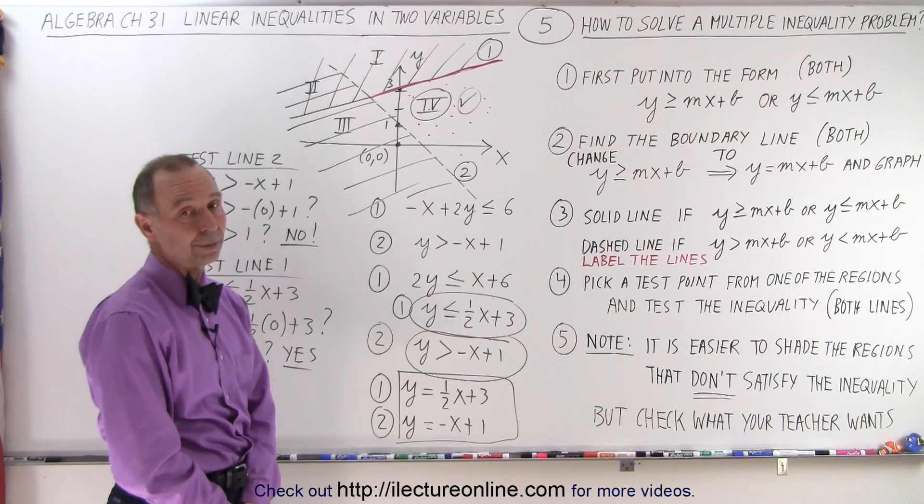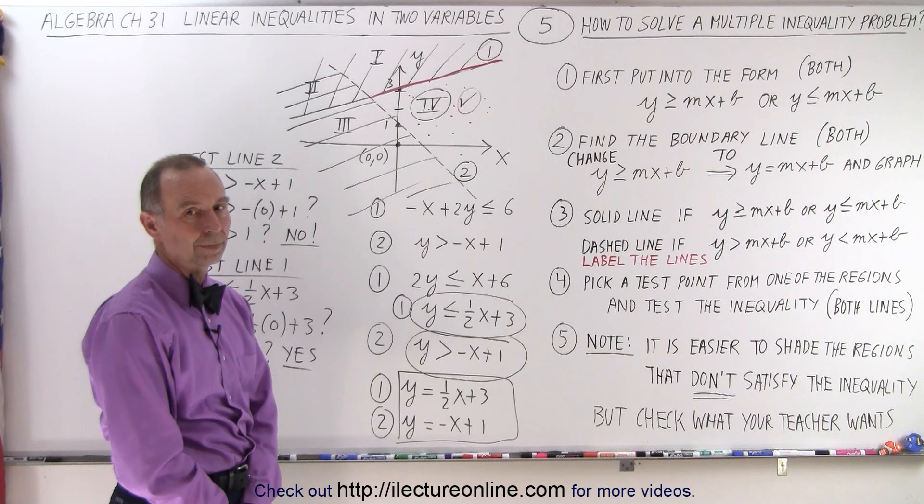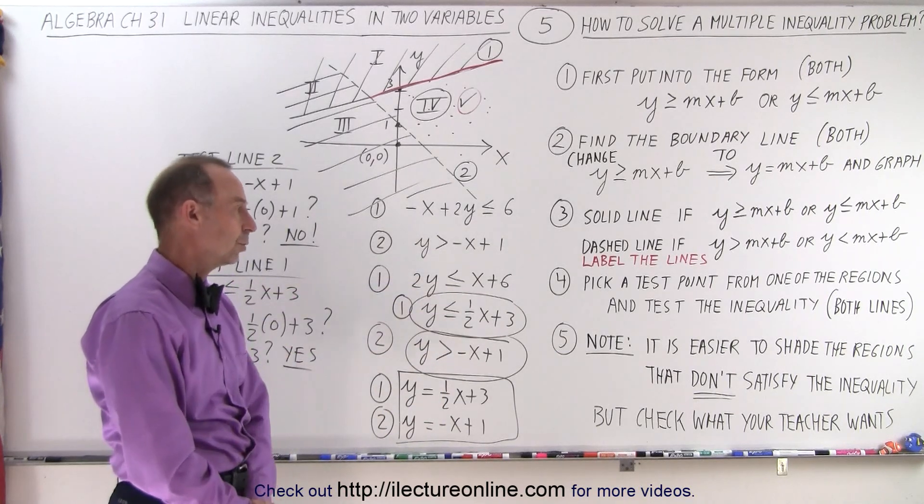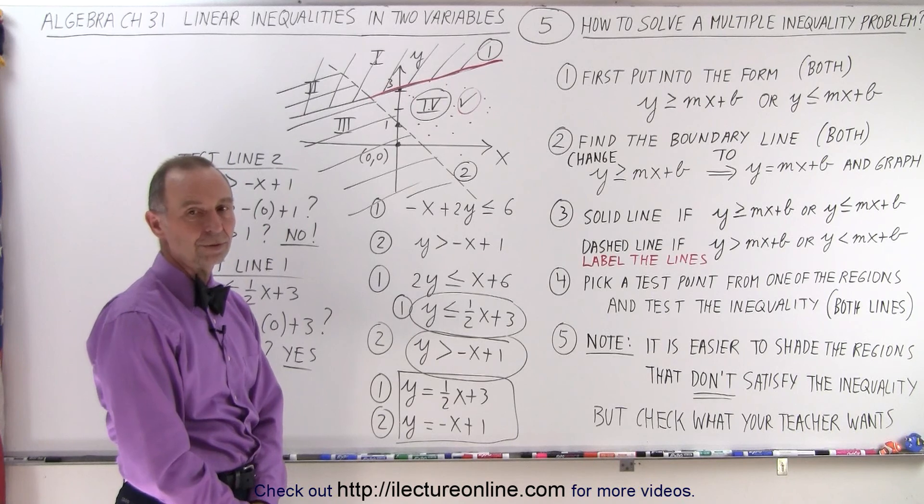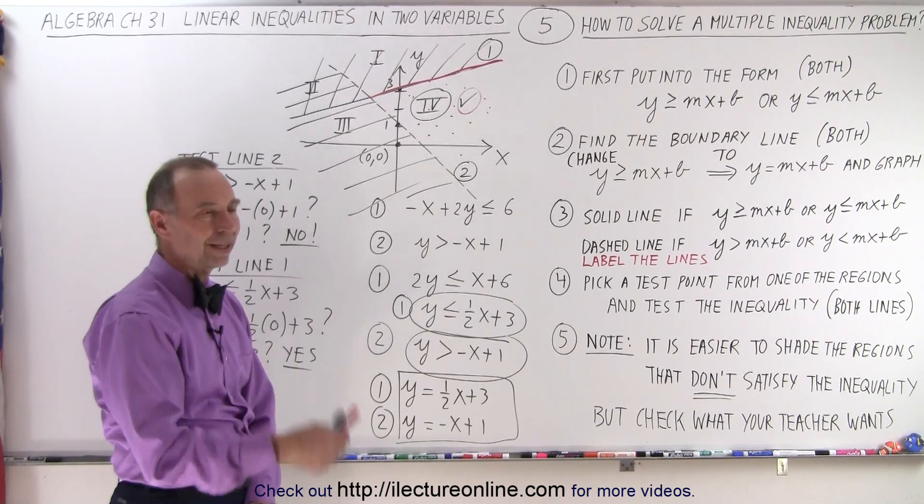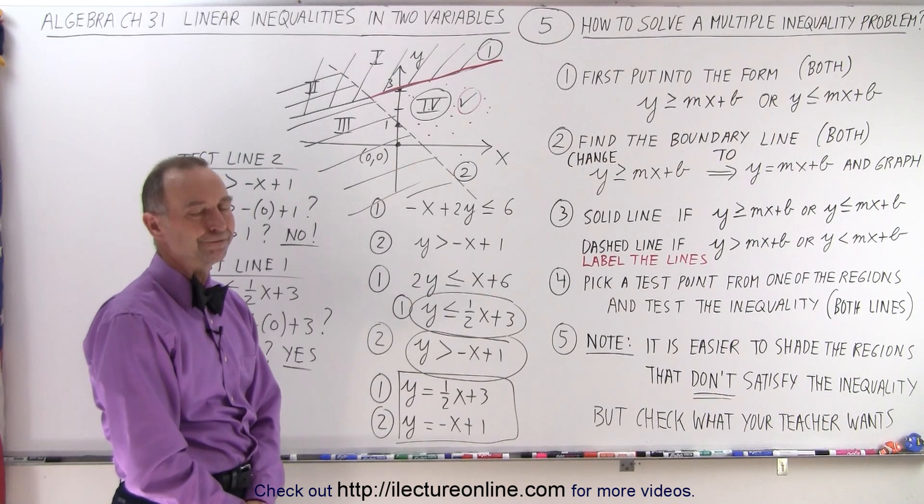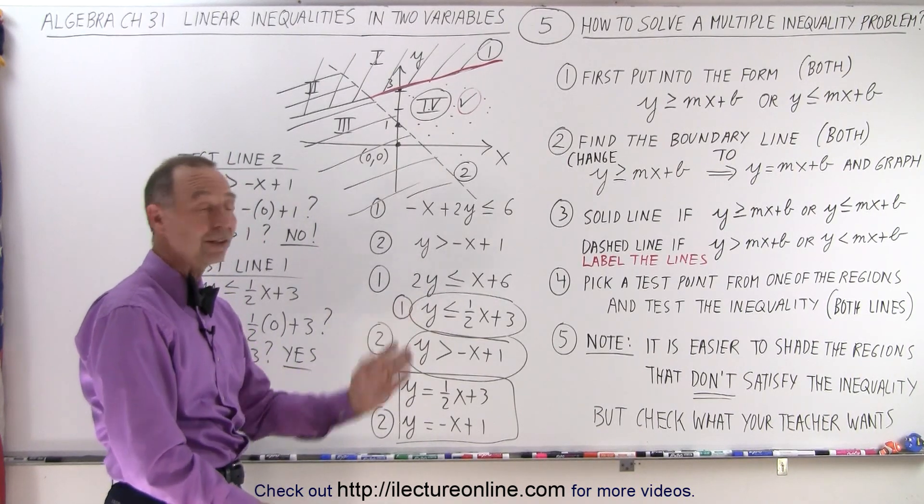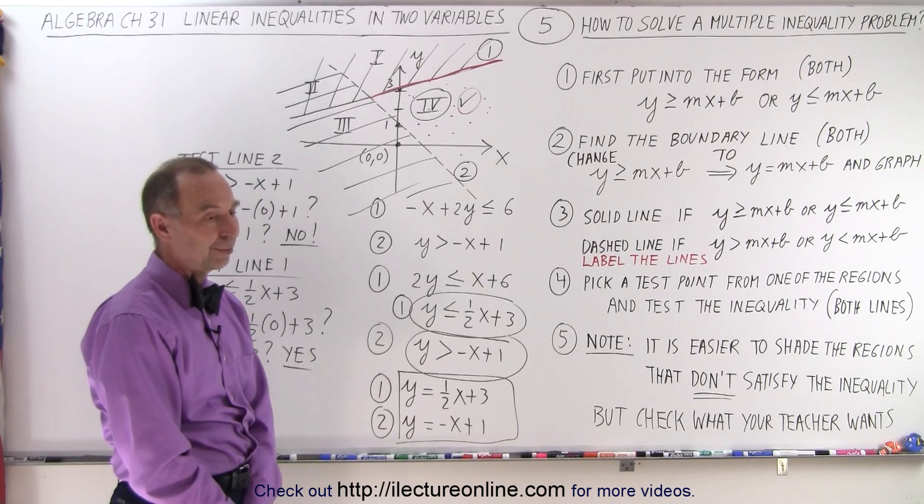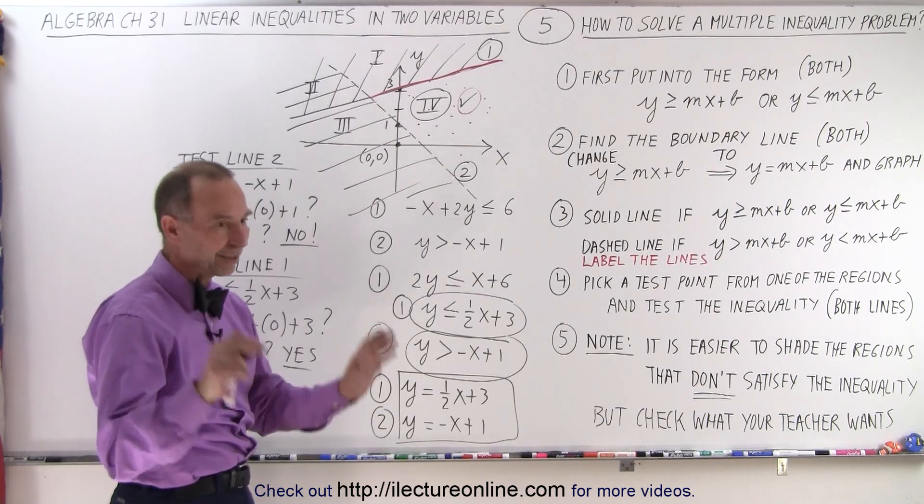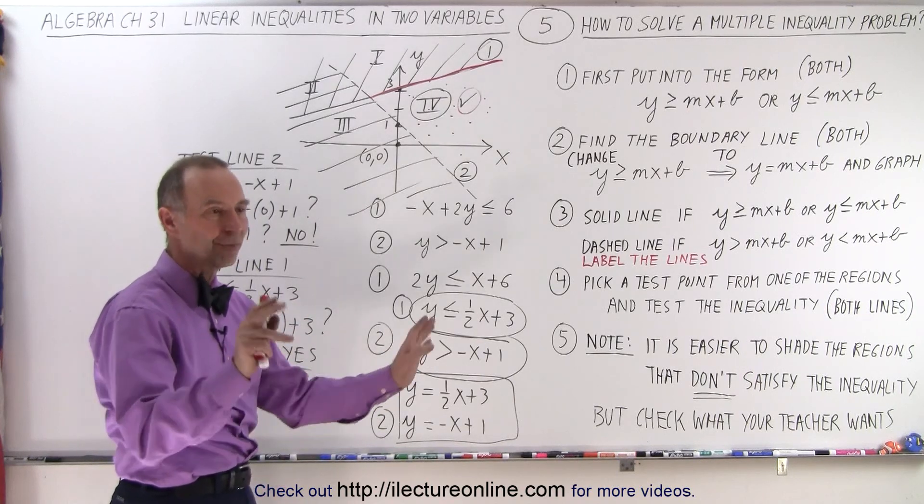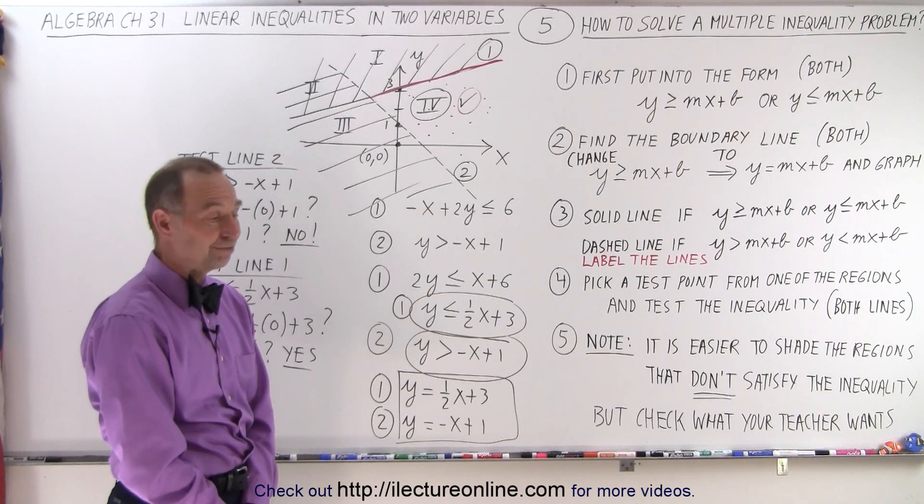When you have multiple ones, you should do it this way. Shade the regions that don't satisfy the inequality, but check what your teacher wants. I tried it the other way, and I just said this is not the good way to do it. This is definitely a better way, and I've always taught it like this in my classes. When students try the method I don't like, they usually make lots more mistakes than when they use the method I show them. So it seems to work.